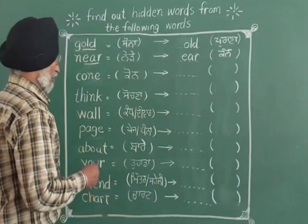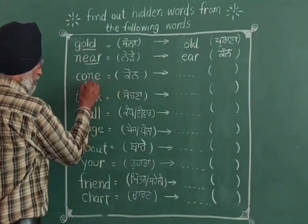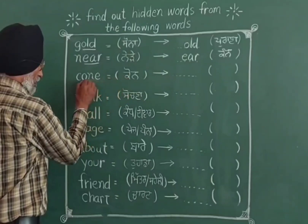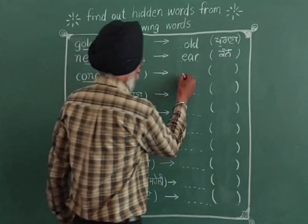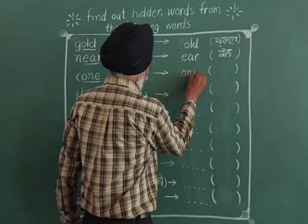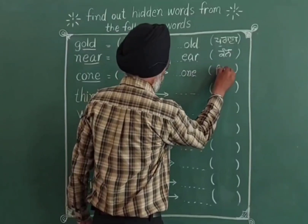The next word is CONE. Inside CONE there is the hidden word ONE. One means 'ek' (one in Urdu).